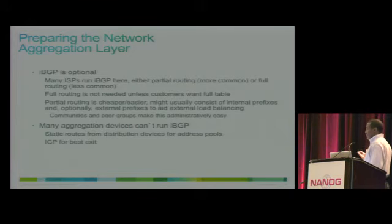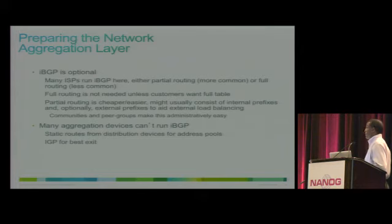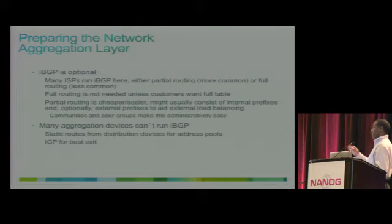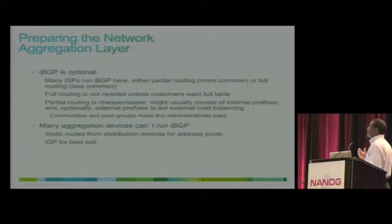For the aggregation layer, IBGP is optional — you can run other protocols or just IGP, and then at the distribution layer inject those routes into IBGP. You can extend IBGP to the aggregation layer and inject routes there, but it doesn't need to carry the full internet table — it can participate in IBGP carrying only the internal network table.